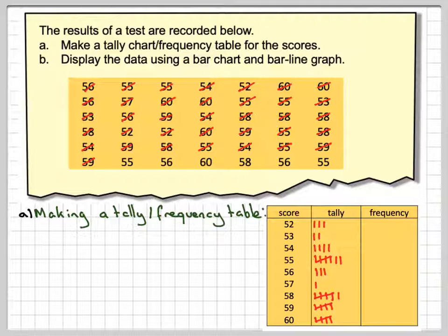Again, we put lines into groups of five: 56, 56, 56, and then 55.